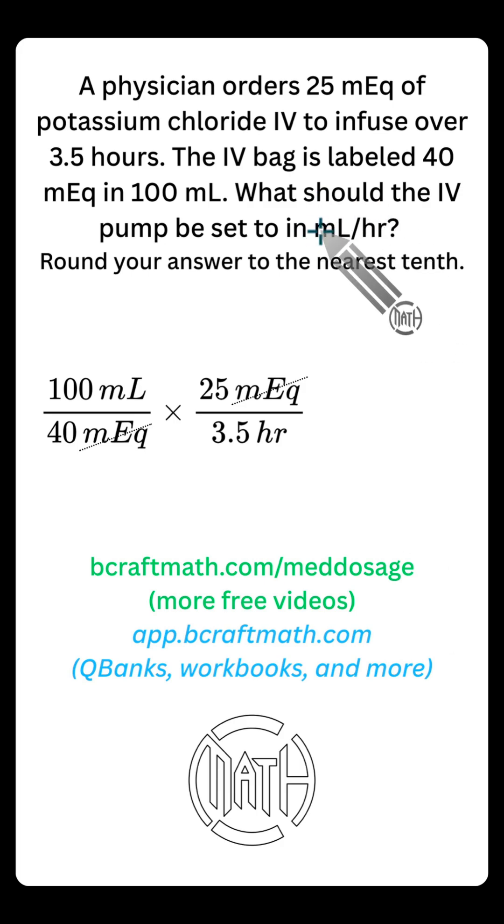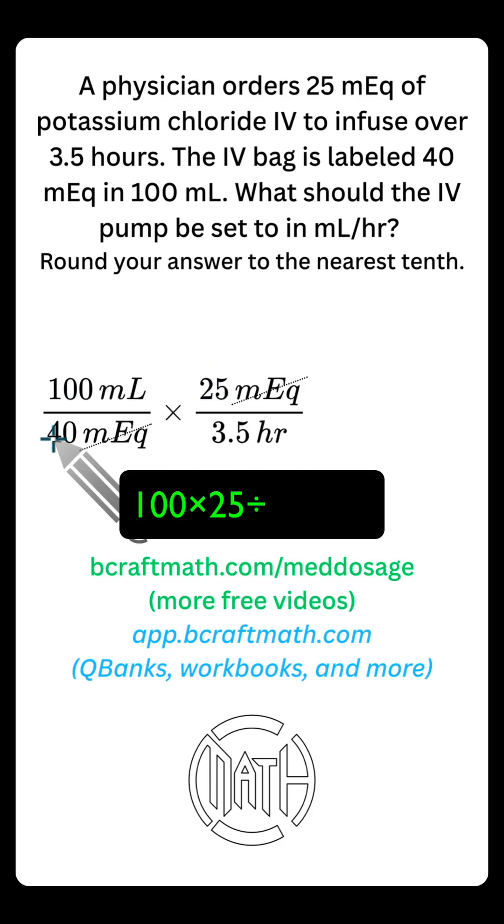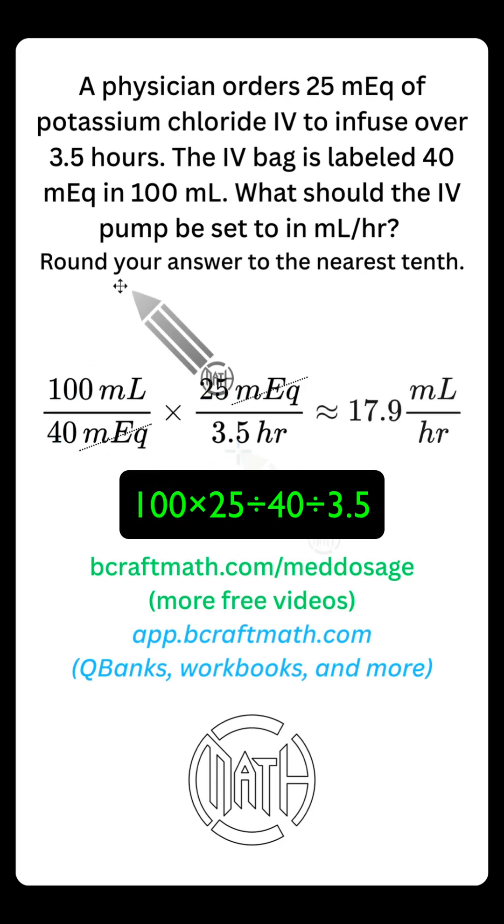Back to our goal, milliliters per hour. Milliliters, only word left at the top. Hours, only word left at the bottom. If you've been keeping up with these dose calc videos, you know it. When we meet our goal, let's multiply all of our top numbers and divide by all of our bottom numbers. This problem did say round your answer to the nearest tenth. Doing so will give us approximately 17.9 milliliters per hour.